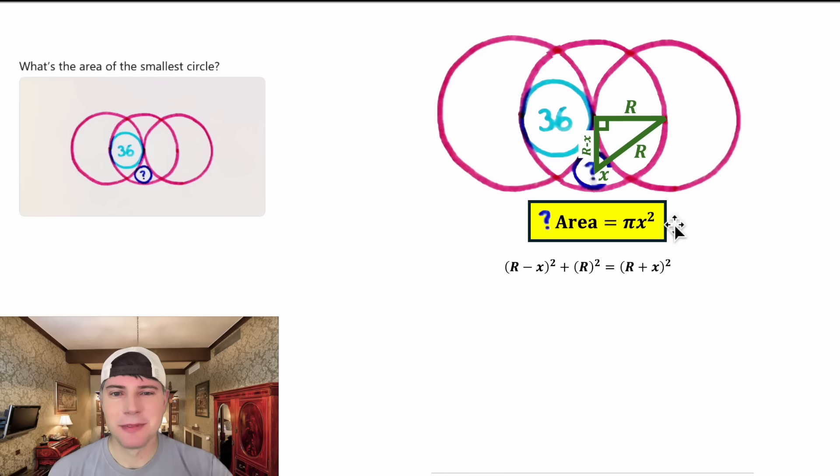Let's do Pythagorean Theorem. It'll be the quantity big R minus x squared plus big R squared equals the quantity big R plus x squared. The quantity big R minus x squared multiplies out to big R squared minus 2 big Rx plus x squared. We can bring down the big R squared. On the right-hand side, the quantity big R plus x squared multiplies out to big R squared plus 2 big Rx plus x squared.